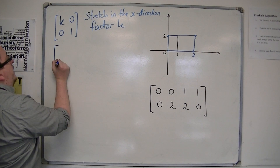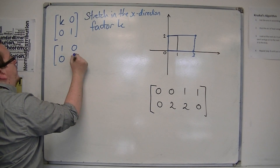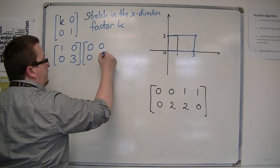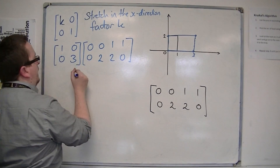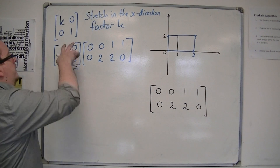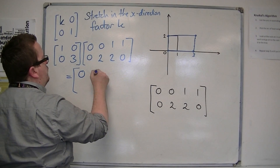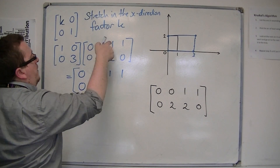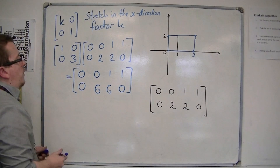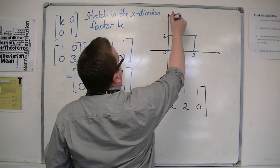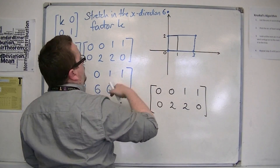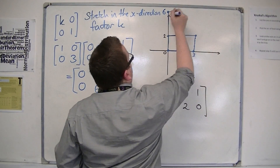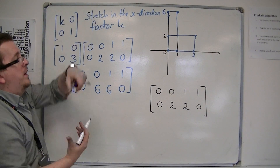If, on the other hand, I look at the matrix [1,0;0,3], let's see what happens. Multiplying [1,0;0,3] by each column of the rectangle matrix gives (0,0), (0,6), (1,6), and (1,0). So the rectangle has been stretched in the y-direction by a factor of 3.